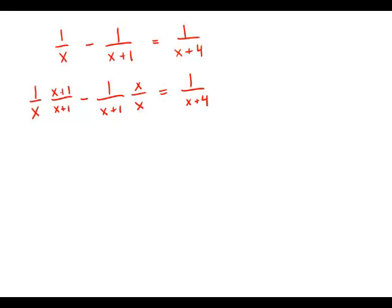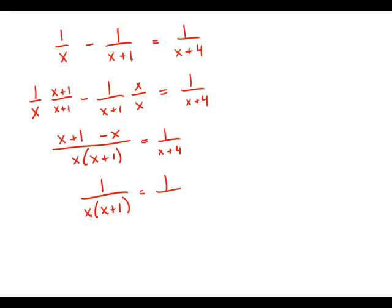So what we are left with is 1 plus x minus x over x times x plus 1. That is just 1 over x times x plus 1 equals 1 over x plus 4.